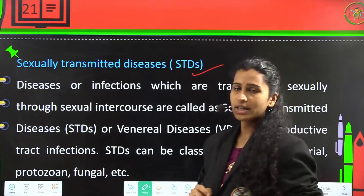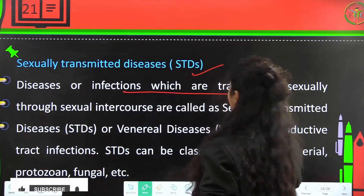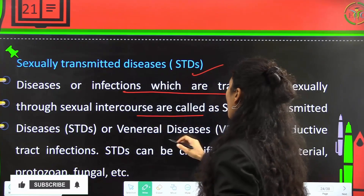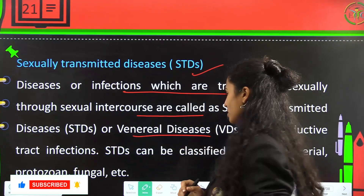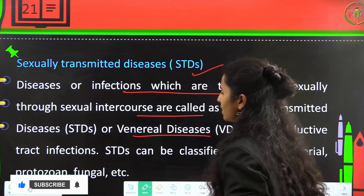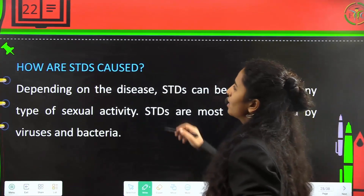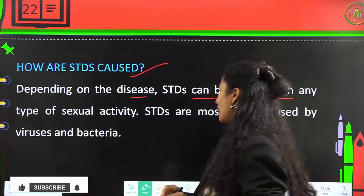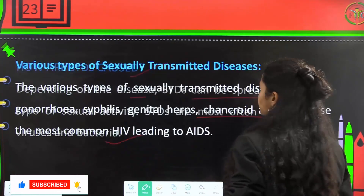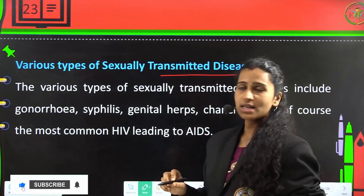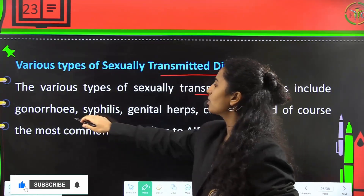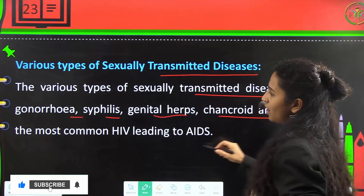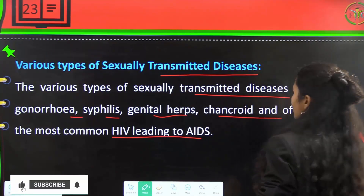STDs — sexually transmitted diseases — are diseases or infections transmitted through sexual intercourse. They are also called venereal diseases or reproductive tract infections. STDs can be classified as viral, bacterial, protozoan, fungal, etc. They are most often caused by viruses and bacteria. Various types include gonorrhea, syphilis, genital herpes, chancroid, and most commonly known, HIV, which ultimately leads to AIDS.